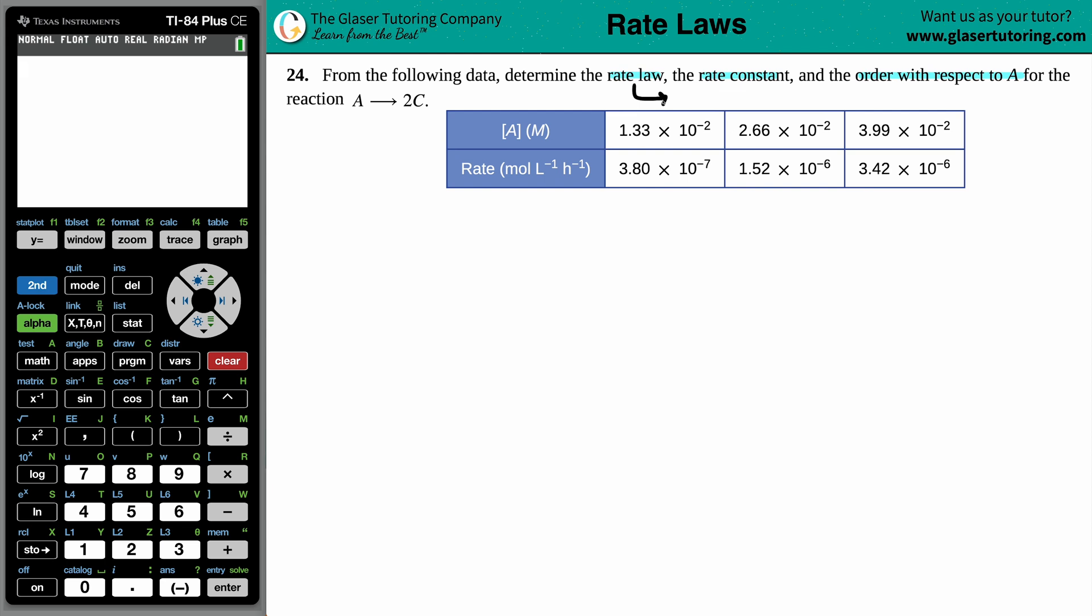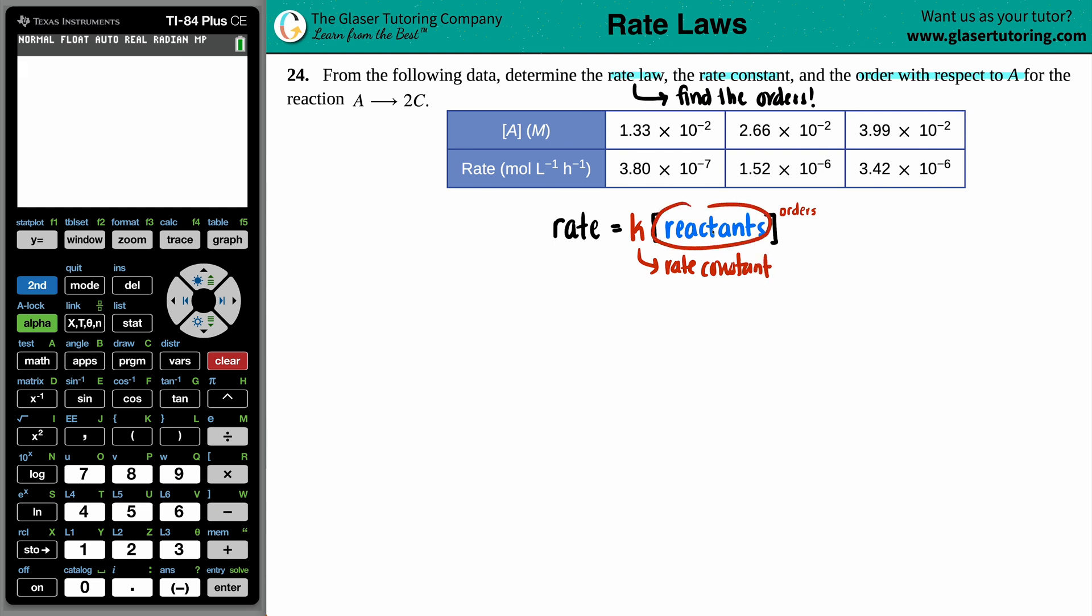they're secretly asking you to find the orders. What does it mean to find the orders? Well, if we look at the general rate law formula, it's always going to be rate equals K, and K is the rate constant. So rate equals K times the concentration of those reactants raised to their orders. So essentially, all we're trying to find here is the exponents. Because once we find those exponents, then we can find the rate law.